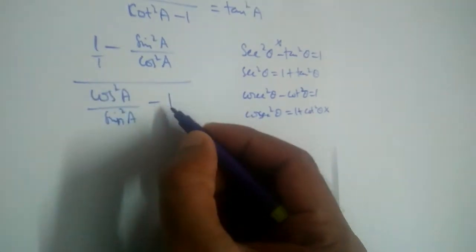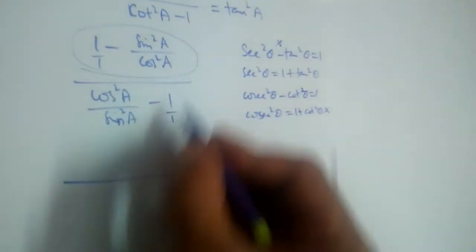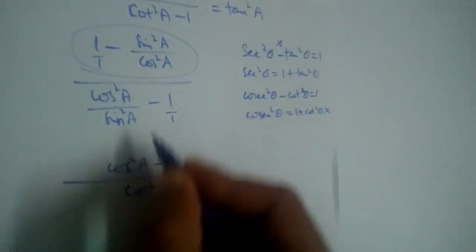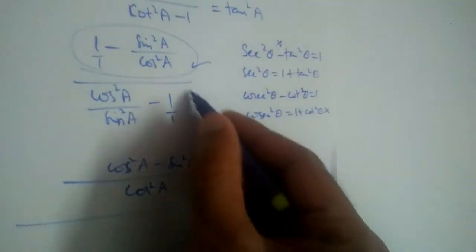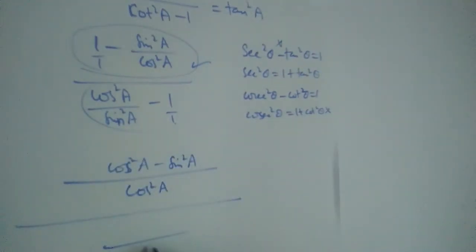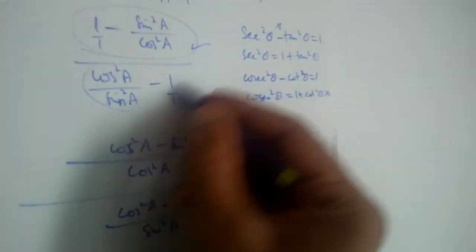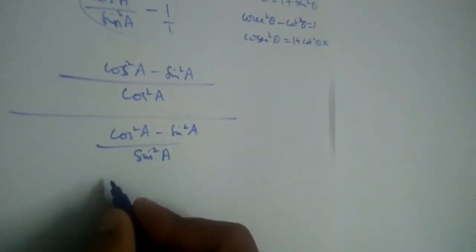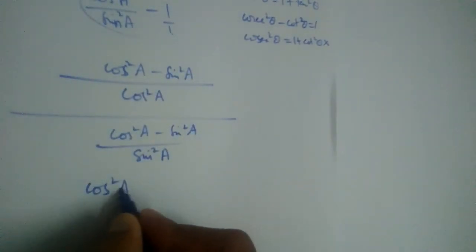Now, let us simplify the numerator. 1 times cos squared a minus 1 times sine squared a gives us cos squared a minus sin squared a, all over cos squared a. For the denominator, we get cos squared a minus sin squared a over sin squared a.